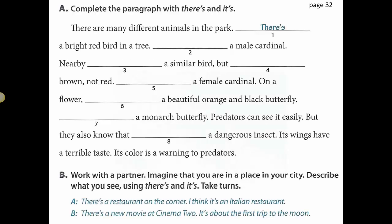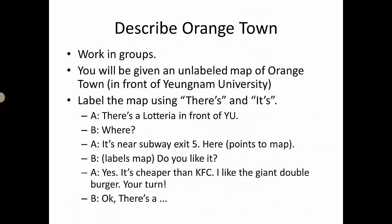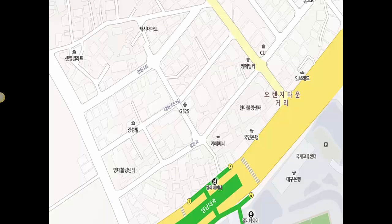The grammar focus is on 'theirs' and 'its' — pretty basic, from their book. We go through this, and then they use these skills to describe and label a map of the area in front of the university, talking about locations that they know.